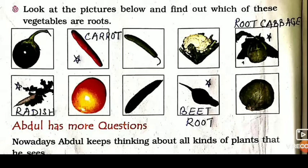In the second line, first picture — radish. What do you call it in Hindi? You can eat it in salad. It is mooli — radish, R-A-D-I-S-H. In the second line, fourth picture, that is beetroot — B-E-E-T, R-O-O-T, beetroot.